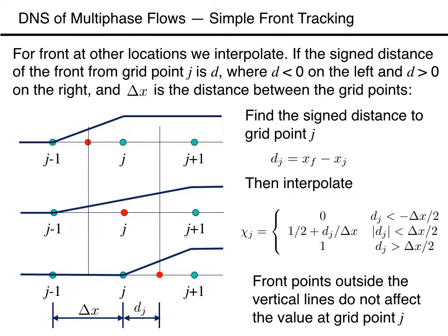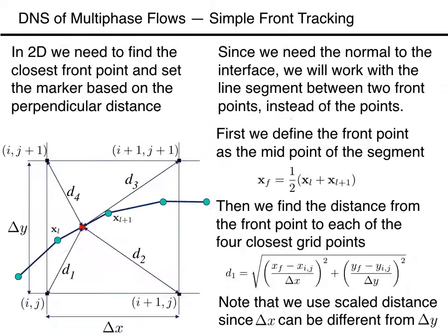Assuming that the motion of the front is always less than a grid spacing, then we need not concern ourselves with points further away. In two dimensions, we need first to determine which part of the front is closest to our given grid point, and then find the perpendicular distance to the interface. To make the computations of the normal as simple as possible, we will work with a segment between two front points and define the front point as the average of the two end points.